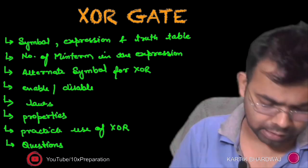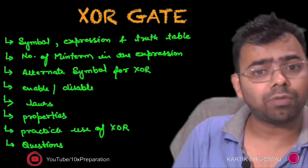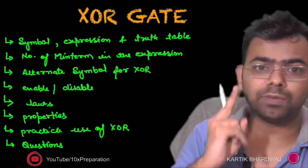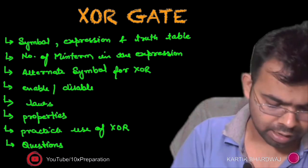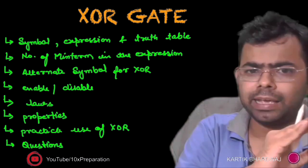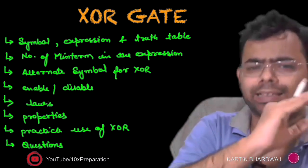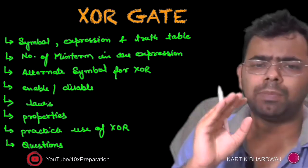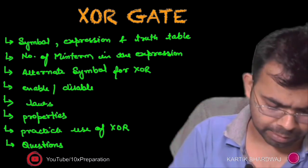Next we'll look at the laws — the commutative and associative laws. Two laws are there and we will discuss both of them. Then we move to the properties: if X XOR with X, Y XOR with Y, Y XOR with Y-bar — we will see what the output will be in each case.